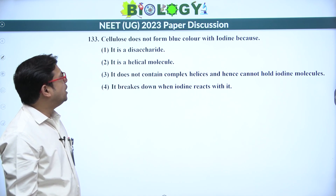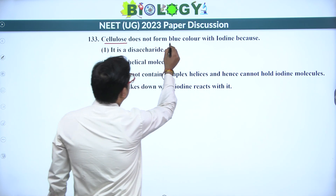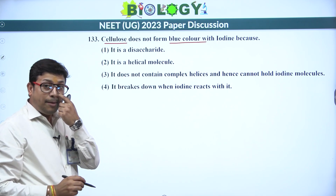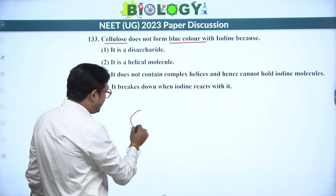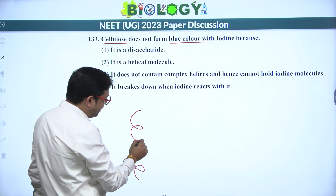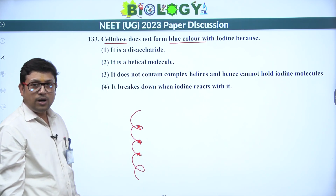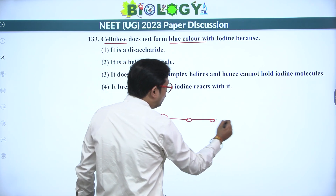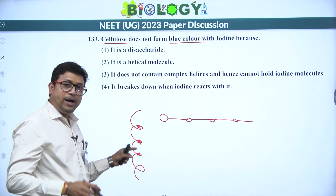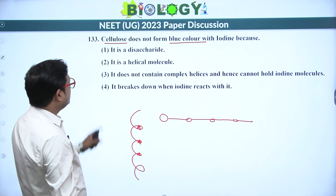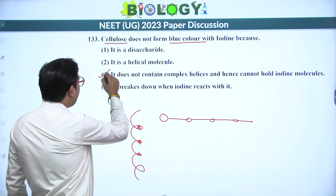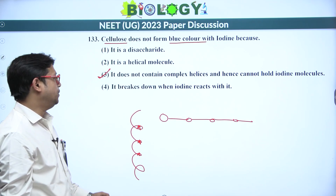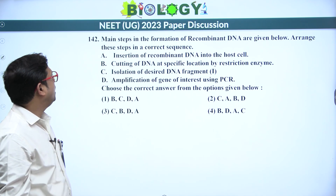Next: cellulose does not form blue color with iodine. Starch gives a blue-black color with iodine because it has two components — amylose and amylopectin. Amylose has a helical structure that traps iodine molecules, giving the blue-black coloration. Cellulose is a straight chain of glucose with no helix structure, so iodine molecules cannot be trapped. Option 3 is correct: it does not contain complex helices and hence cannot hold iodine.